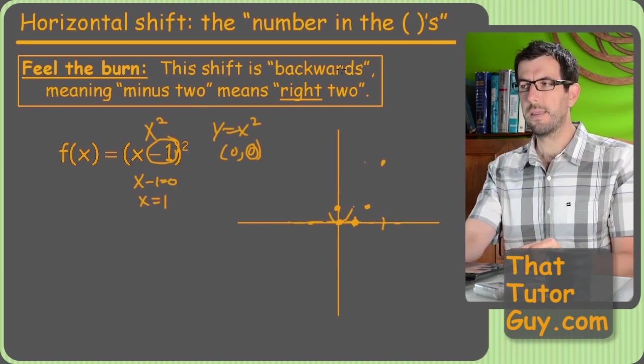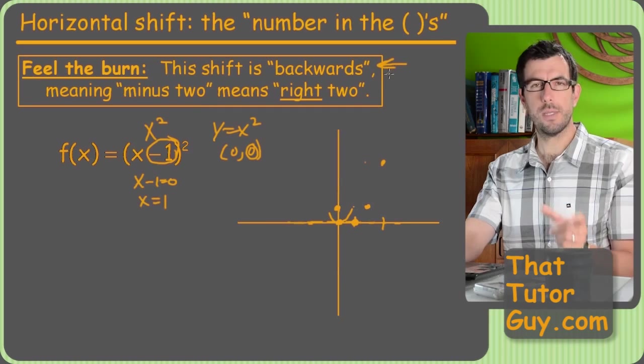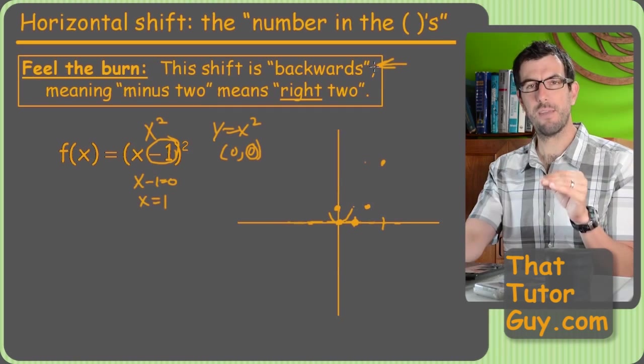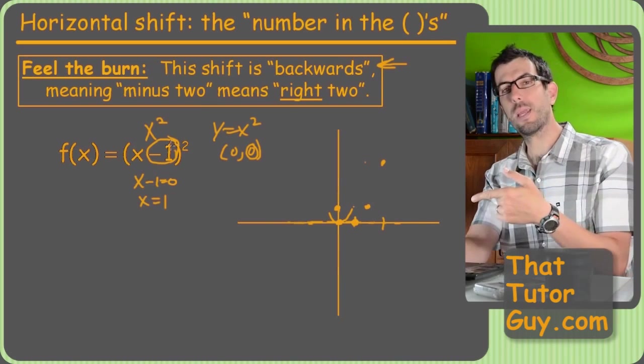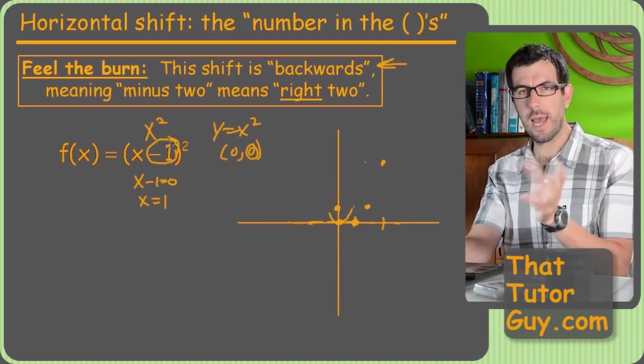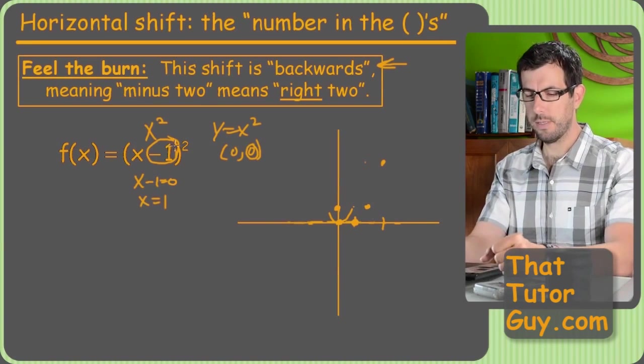So this is the key thing. What I mean by backwards is that the horizontal shift has a negative sign in front of it automatically. So if you have a negative one, that's actually a shift to the right one in the positive direction. So it's kind of opposite, backwards or opposite, whatever.